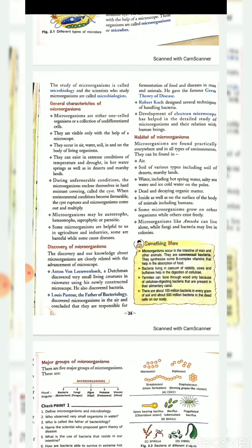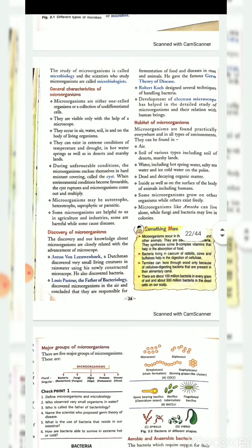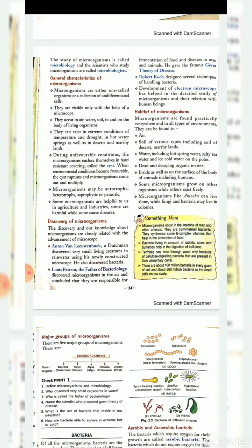General characteristics of micro-organisms: Number one, micro-organisms are either one-celled organisms or a collection of undifferentiated cells. Some may have multiple cells. They are visible only with the help of a microscope. They occur in air, water, soil, and on the body of living organisms.